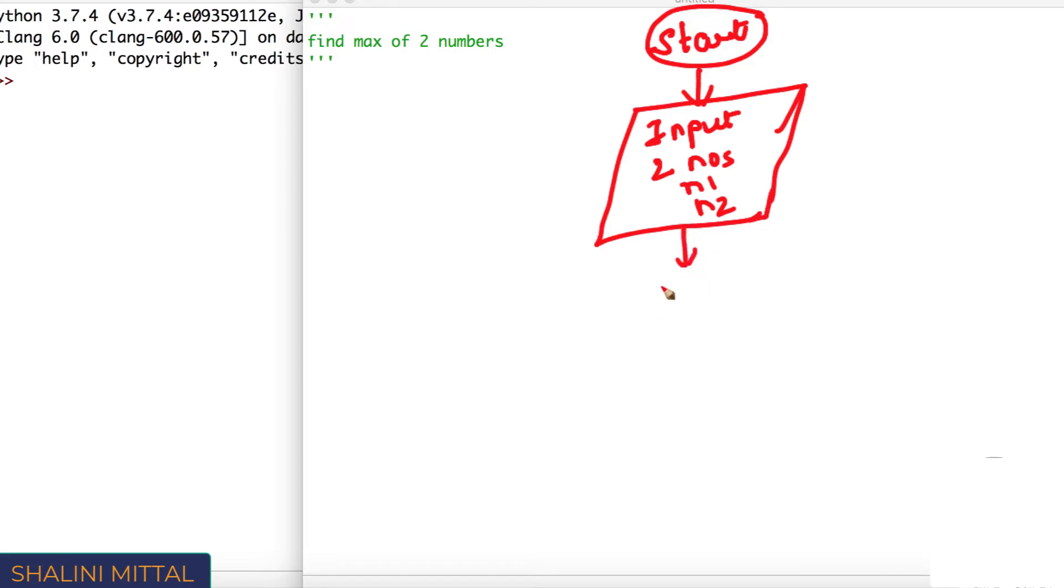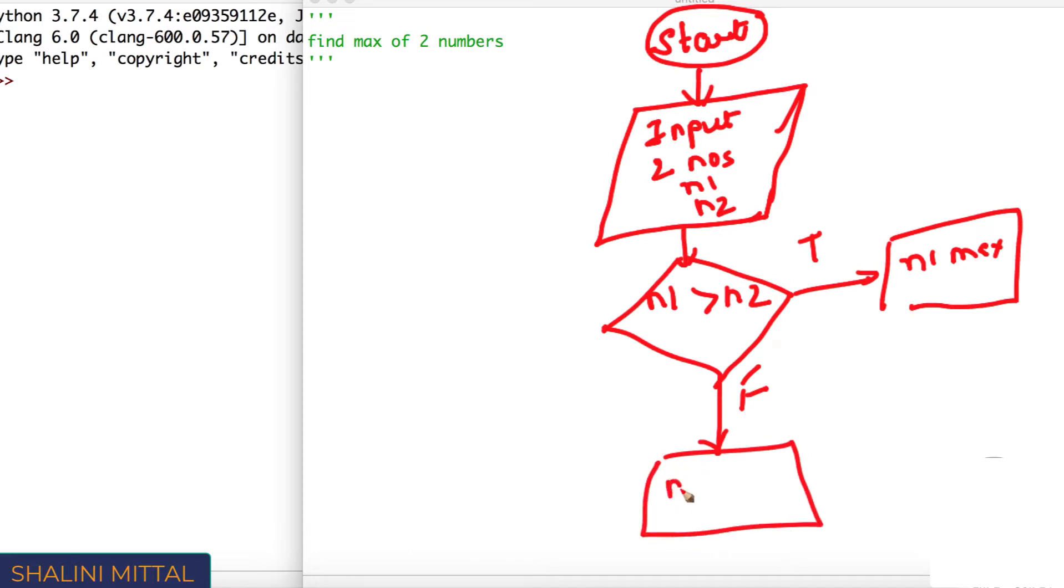Now once we take the input, we need to check whether n1 is greater than n2. If true, in that case, we'll just print n1 is max. If n1 is not greater than n2, we will print n2 is max.